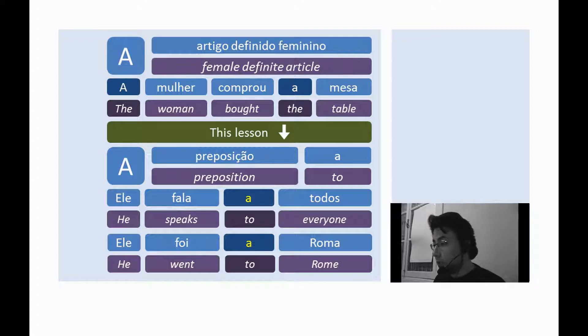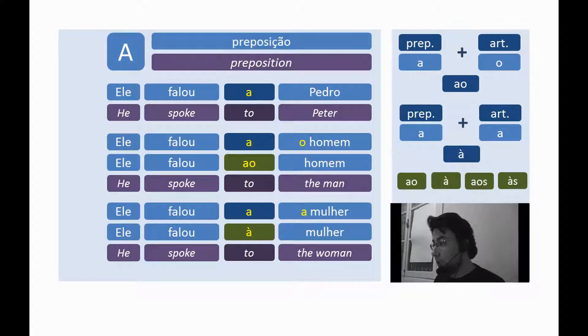The preposition a may be contracted with the article o, forming ao. And the preposition a may be contracted with the article a, forming à. The pronunciation is the same, but there is a graphic accent called acento grave, indicating the crase, the contraction of identical vowels. Don't worry about this now. It's just a quick note.